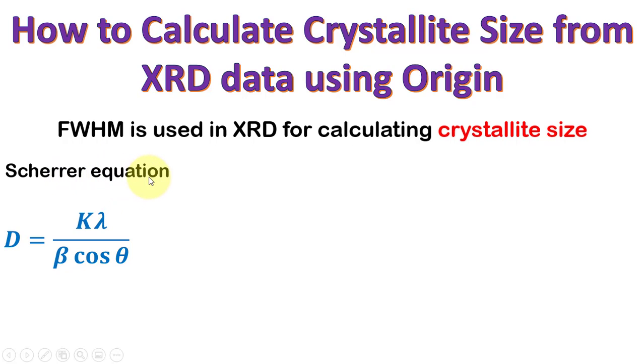We will use the Scherrer equation: crystallite size equals K lambda divided by beta cos theta. This equation is valid for crystallite size up to 200 nanometers.